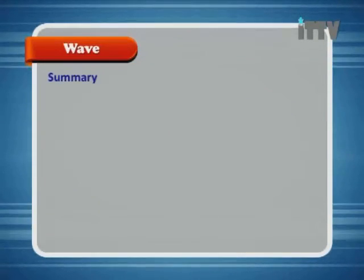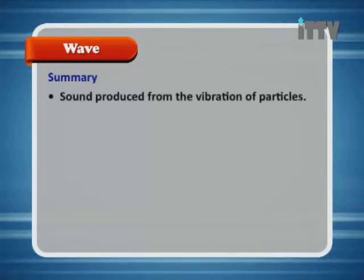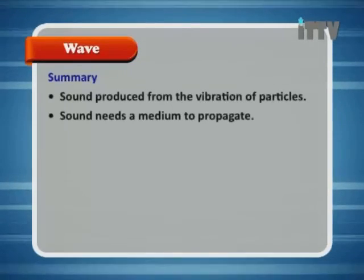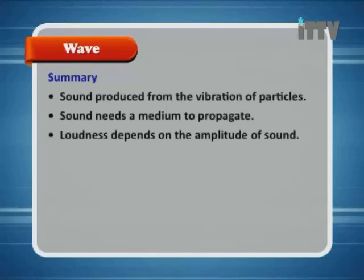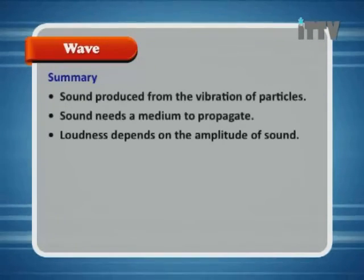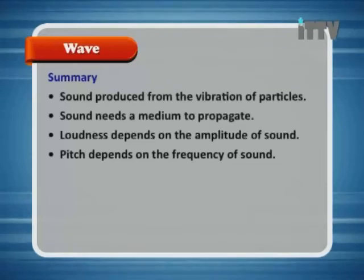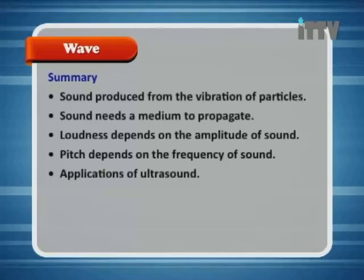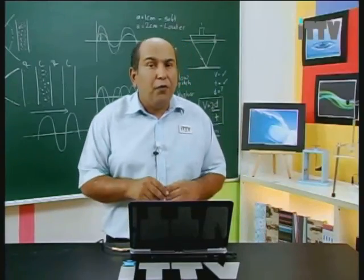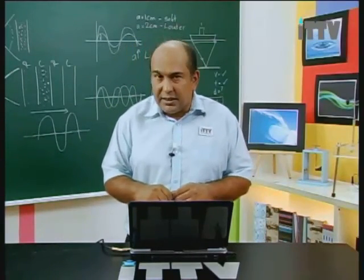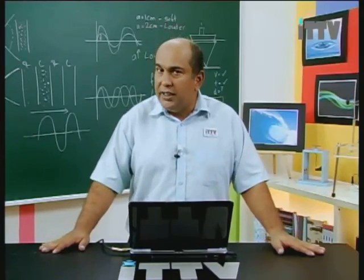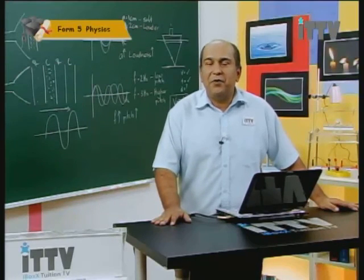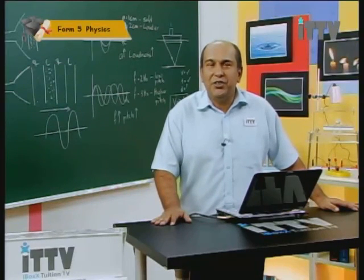Summary: sound is produced from the vibration of particles. Sound needs a medium to propagate. Loudness depends on the amplitude of sound. Pitch depends on the frequency of sound. Applications of ultrasound — remember the formula V = 2D / T to detect distances. That's all the time we have for this lesson. Thank you for watching ITTV.